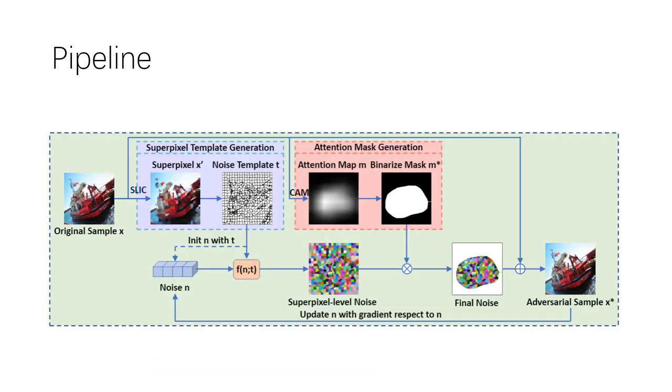With an input image, we first get its corresponding superpixel as a template and generate the superpixel-wise adversarial noise. Then we calculate the attention mask and crop the noise with it. At last, we add it onto the input and get the final adversarial samples.